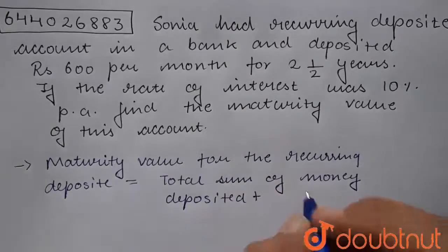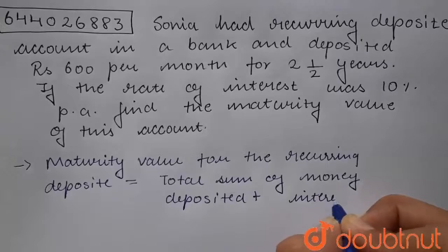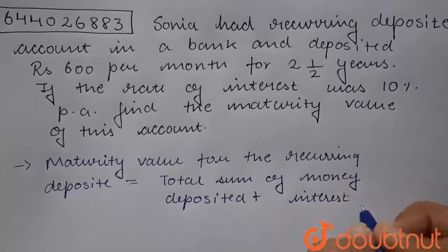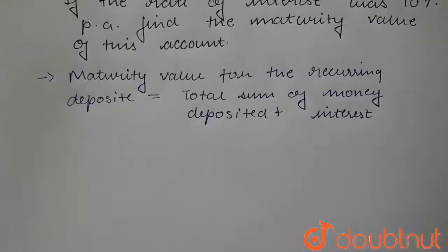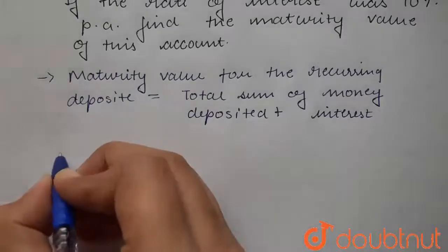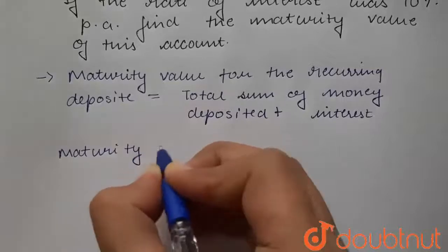plus interest earned on it. The formula for maturity value is: Maturity Value = P × n + [P × n × (n+1) / (2 × 12)] ×